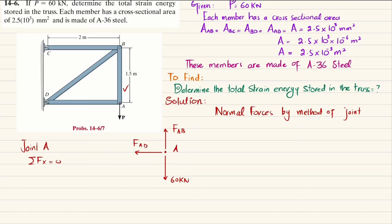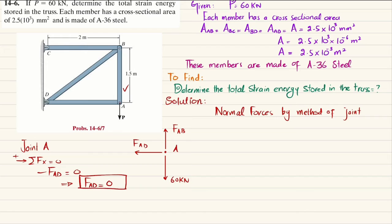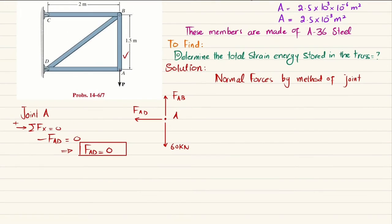Using equilibrium equations: the sum of all forces along the x-direction equals zero. So minus F_AD equals zero, which means the force in member AD is zero.